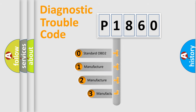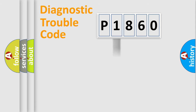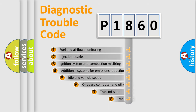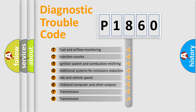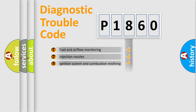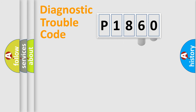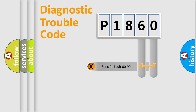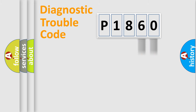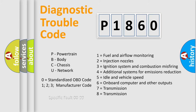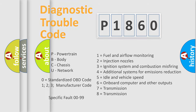If the second character is expressed as zero, it is a standardized error. In the case of numbers 1, 2, or 3, it is a more specific expression of a car-specific error. The third character specifies a subset of errors. This distribution is valid only for the standardized DTC code. Only the last two characters define the specific fault of the group, and such a division is valid only if the second character code is expressed by the number zero.